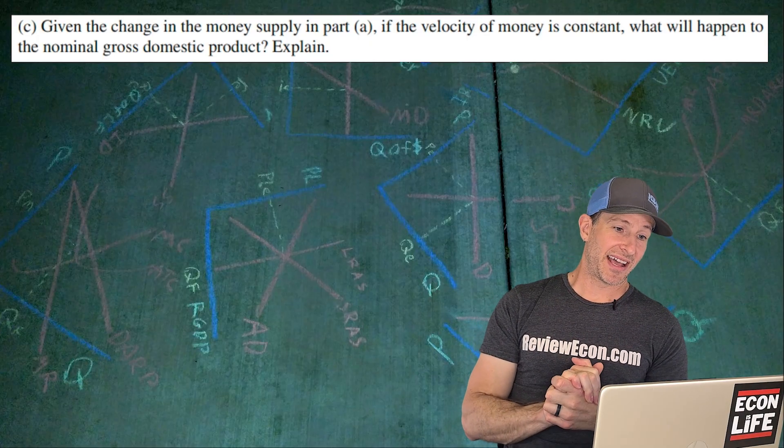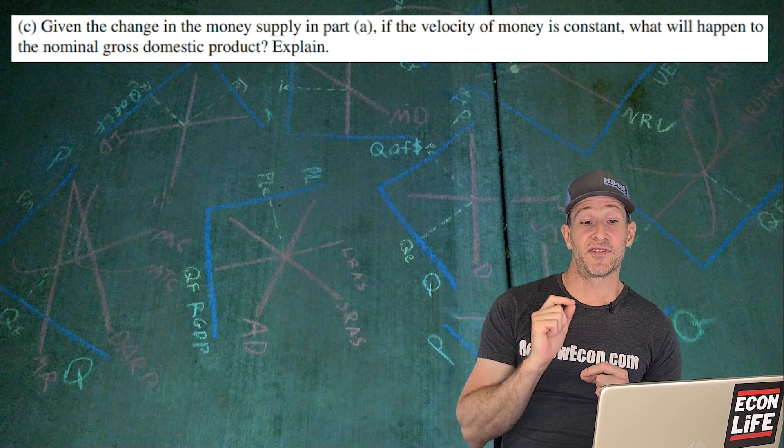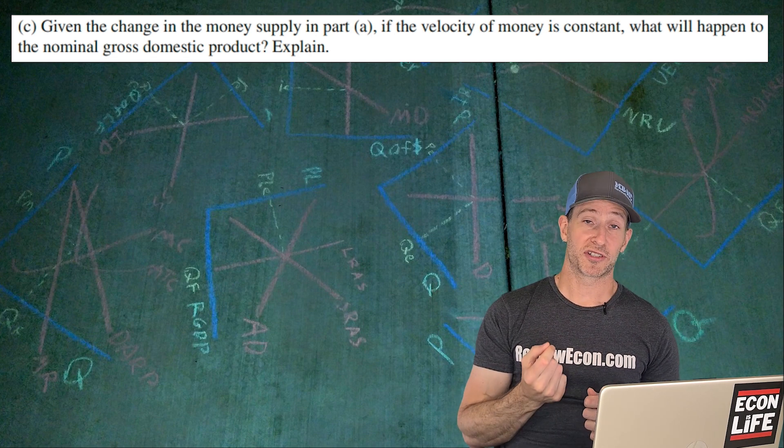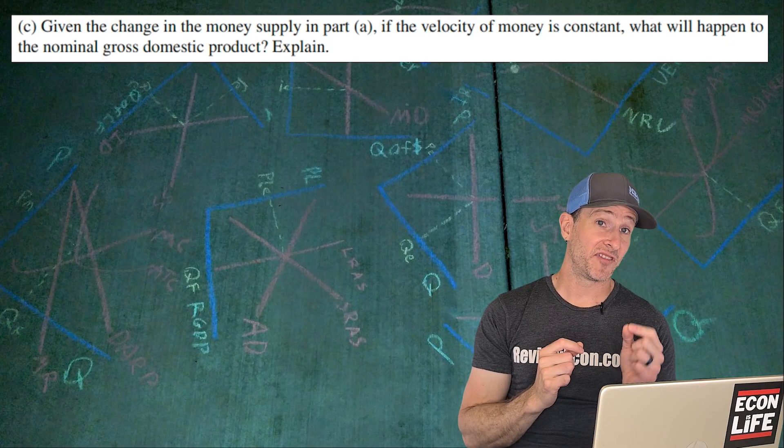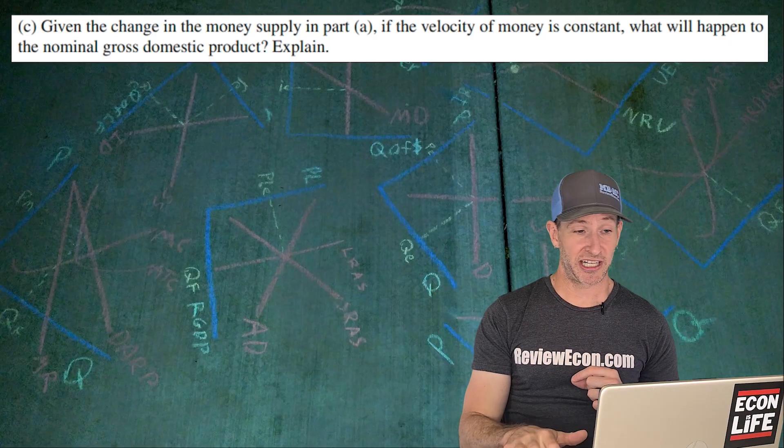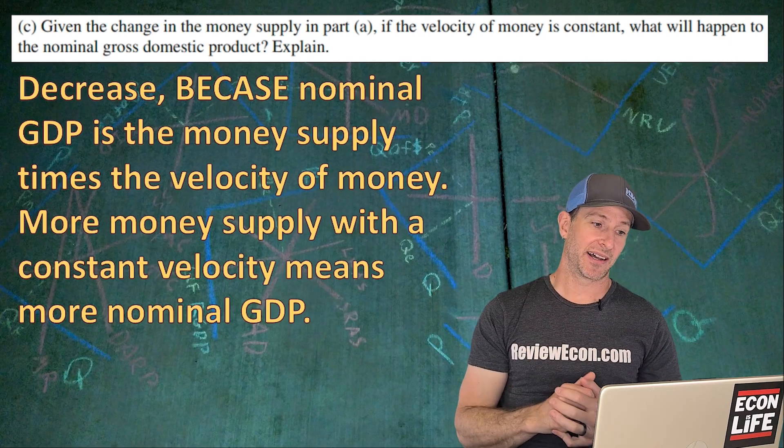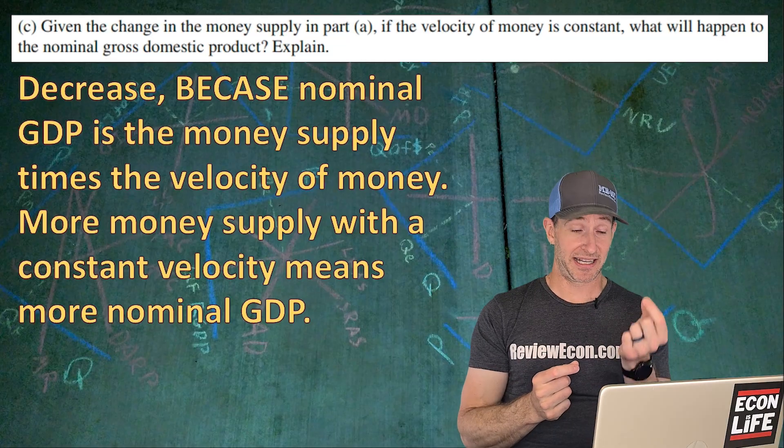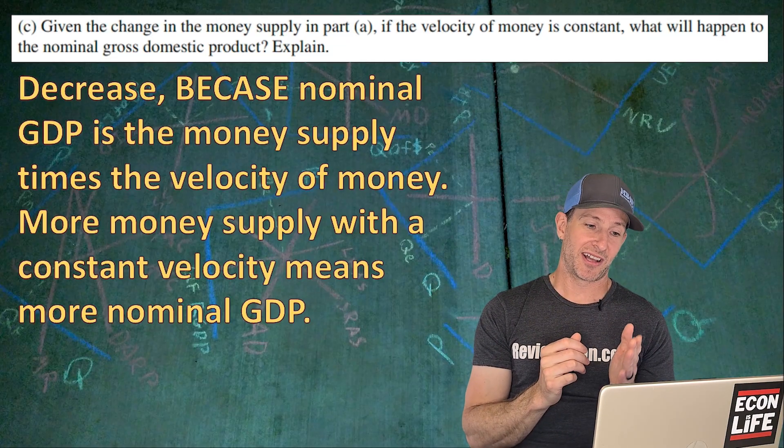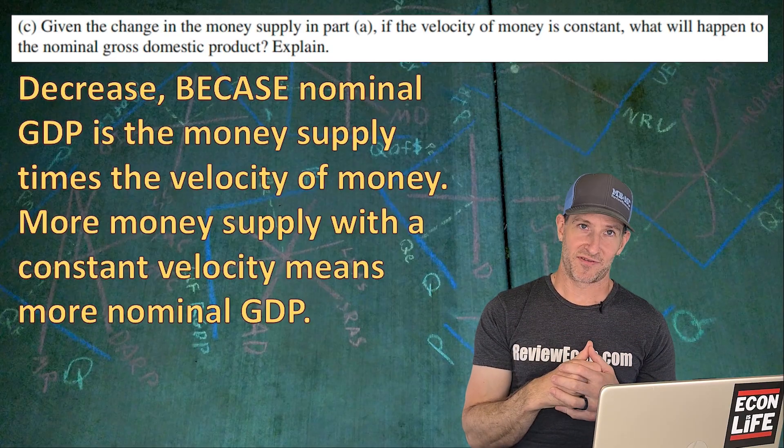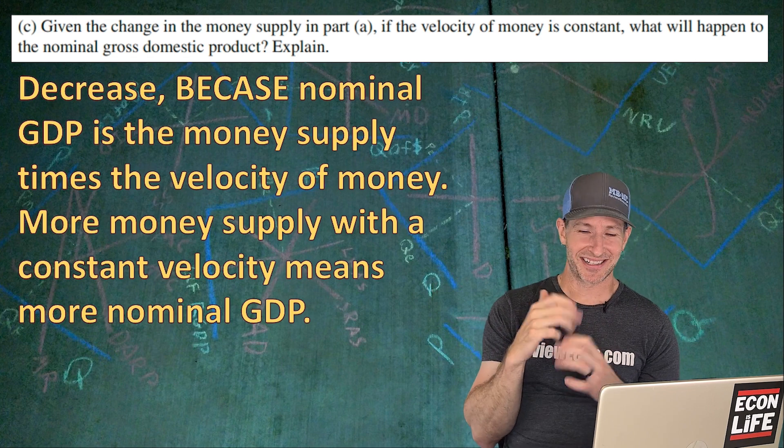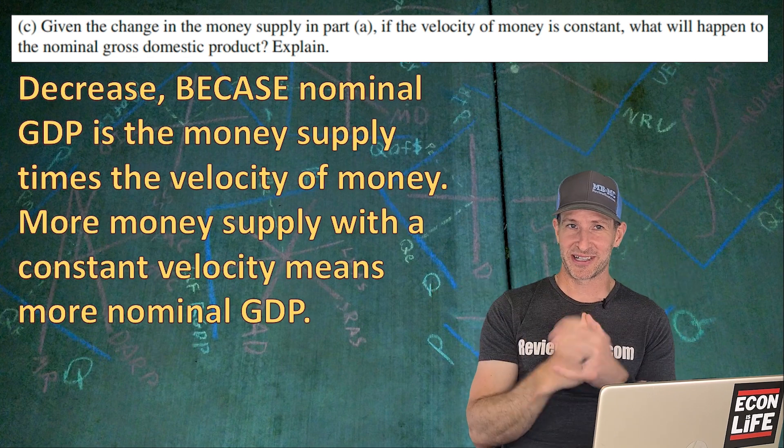On to letter C. Based on that change in the money supply, we're assuming that the velocity of money is constant. We have to say what will happen to nominal gross domestic product and explain. This question is about the MV equals PY formula. Remember both sides of that formula will equal nominal GDP. We're going to see a decrease because nominal GDP is the money supply times the velocity of money. With more money supply and a constant velocity of money, that means we have to have a higher amount of nominal GDP. It's just mathematically the case. I'm a little worried about my explanation, but I think it'll work.